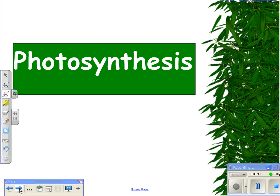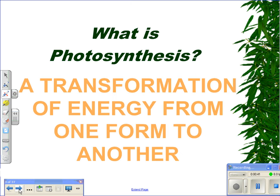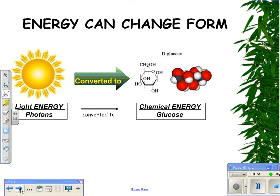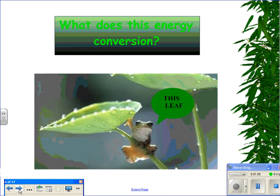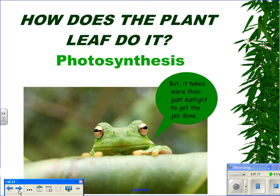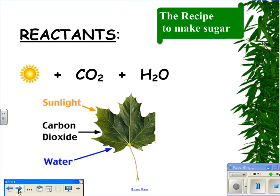First, we're going to focus on photosynthesis. So what is this process of photosynthesis? Essentially, it's a transformation of energy from one form to another. It starts off with light energy from the sun in the form of photons. That light energy is going to be converted to chemical energy in the form of glucose. The energy is going to be stored in the bonds of the glucose molecule. A plant leaf can do this energy conversion by the process of photosynthesis, but it takes more than just sunlight — there are other ingredients that go into making sugar.